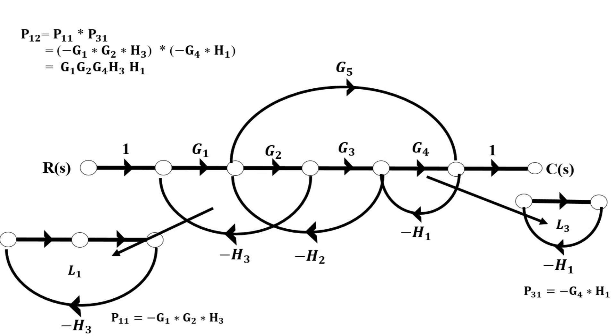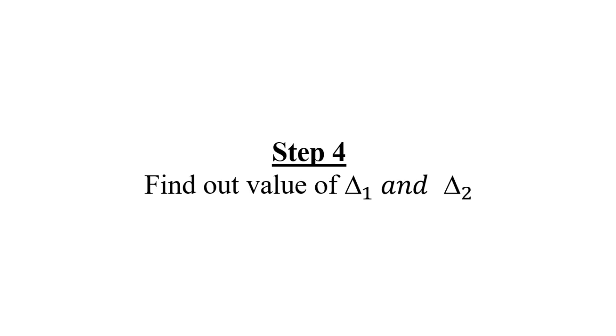Here, two means that these are two non-touching loops, and one suggests that this is one group or the first group of two non-touching loops. If there are any three non-touching loops, we will treat those loops in the same manner. But there are no three non-touching loops, so we will go to step number four, which is to find the value of delta1 and delta2.